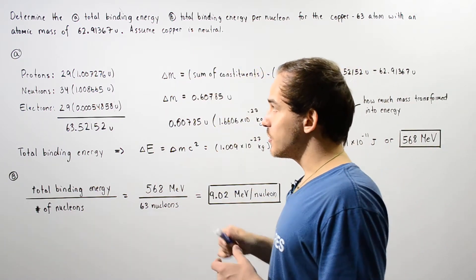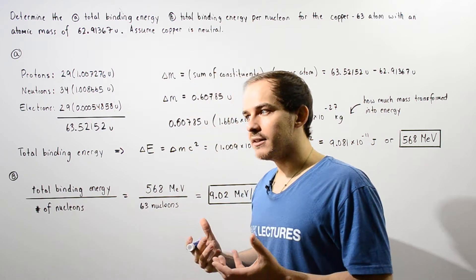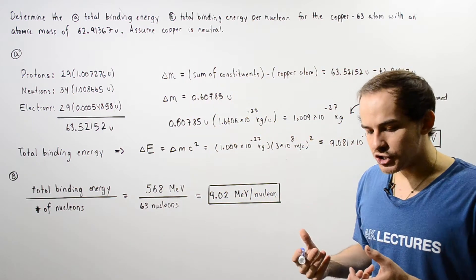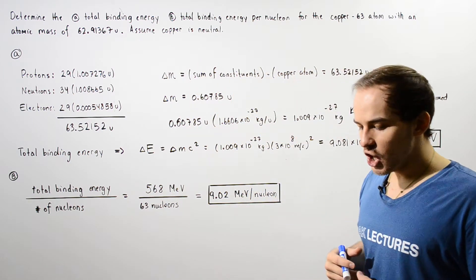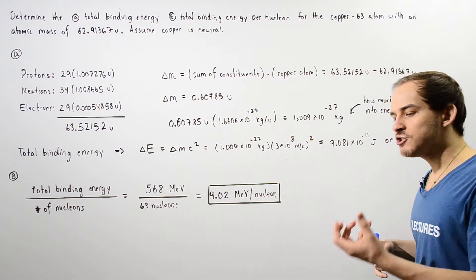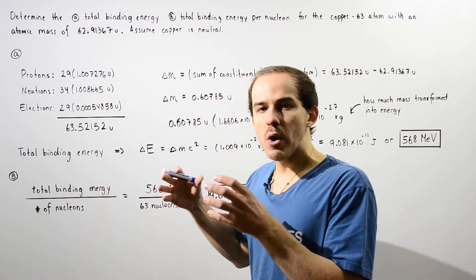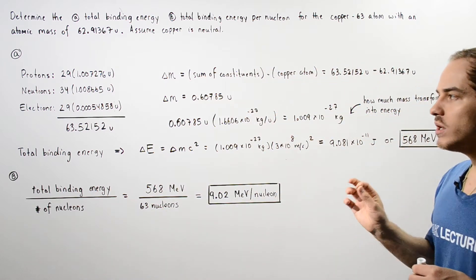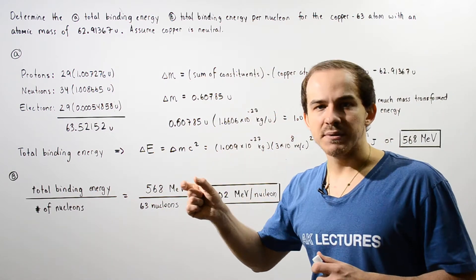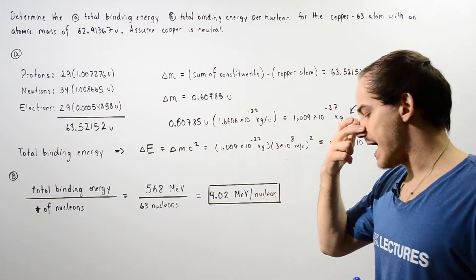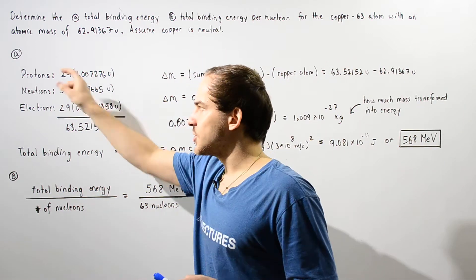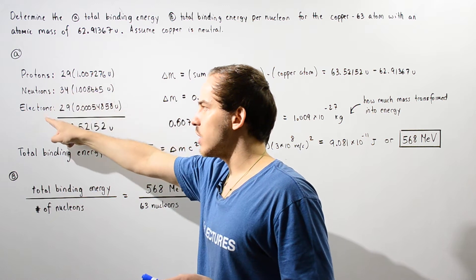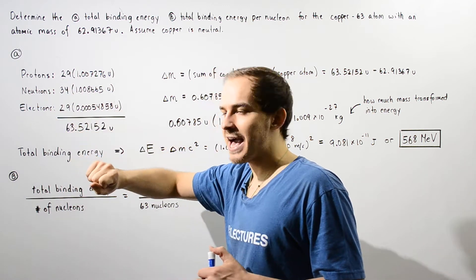Let's begin with part A. To calculate the total binding energy, that basically means we want to calculate how much energy was released when this copper atom was formed. To calculate that, we want to find the discrepancy in mass, the change in mass. The first step is determining how many protons, neutrons, and electrons we have in the atom.